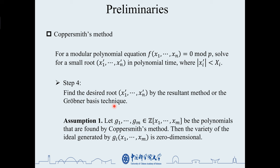In this step, it is necessary to assume that these polynomials are linearly independent to ensure that there is a solution. Thus, the Coppersmith method is heuristic.